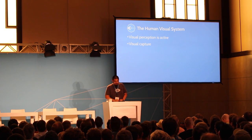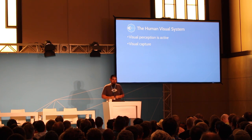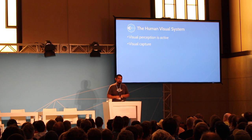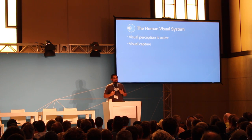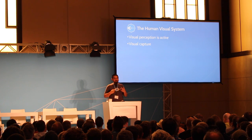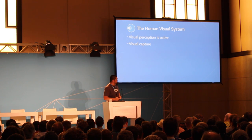An important phenomenon related to visual perception is visual capture — the term perceptual scientists give to the phenomenon that information your visual system is receiving is taken as what's actually happening to your body. Vision can actually dominate other senses, which we'll talk more about in a bit.